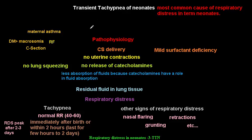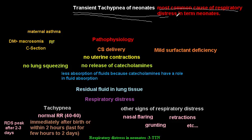Let's continue our talk about respiratory distress in neonates. In the previous two videos I talked about the most important cause of respiratory distress in preterm infants, which is respiratory distress syndrome, and I talked about meconium aspiration syndrome. In this video I'm going to talk about the most common cause of respiratory distress in term neonates, which is transient tachypnea of neonates. This is the most common cause in term neonates, while for preterm, respiratory distress syndrome is the most important.